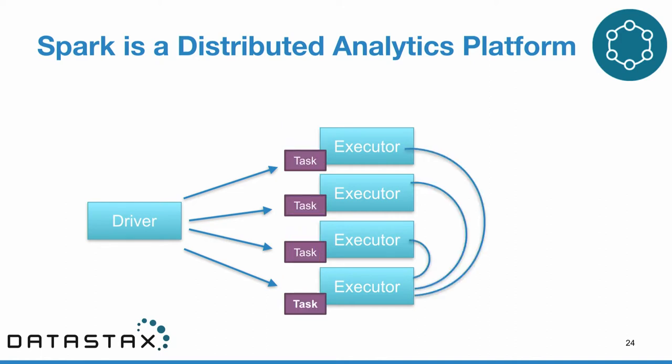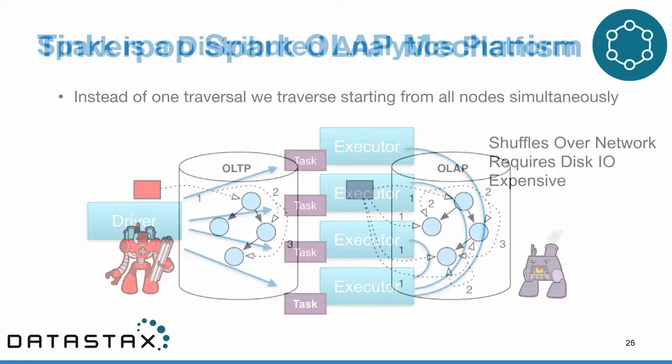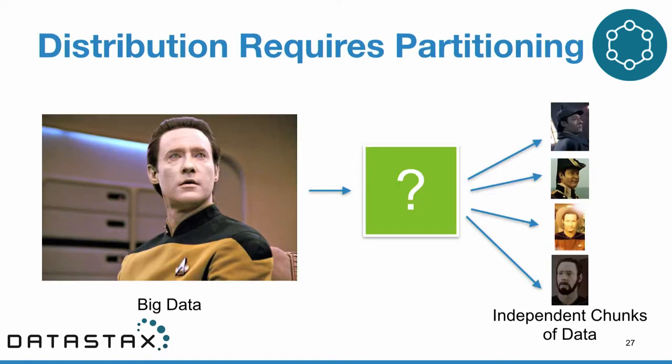The important thing about Spark is that whenever you want any piece of your data to relate to any other piece, you have to do a shuffle — and shuffles are expensive. There's a serialization penalty, network overhead, and disk IO required. We generally want to avoid them. Given that understanding, how does TinkerPop OLAP work? The TinkerPop Spark OLAP engine works by starting a traversal at every single vertex at once and then moving from all those vertices to all the next vertices in a shuffle step.